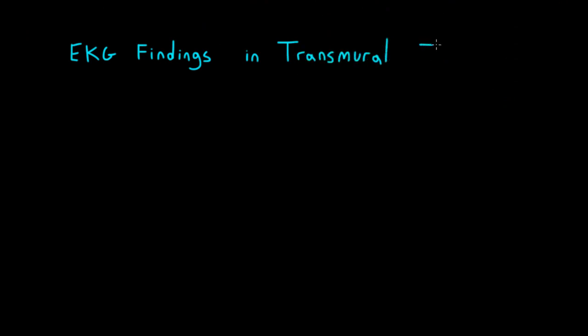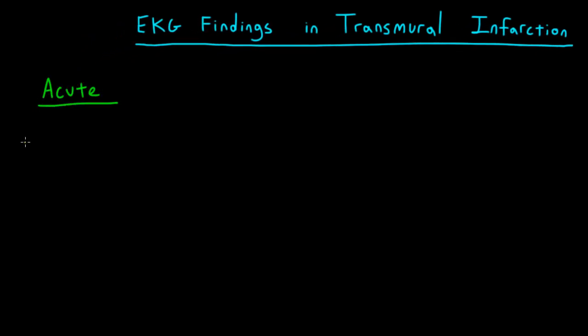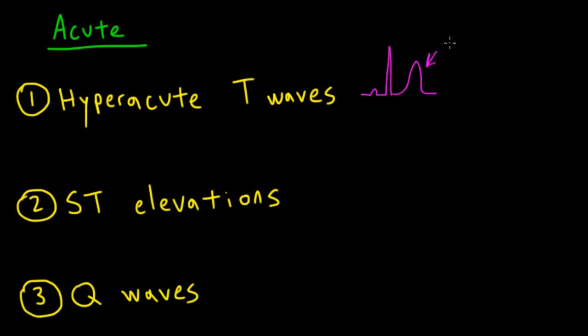Let's talk about the typical evolution of EKG findings with transmural infarction, as described in textbooks. Note that in real life, it's common for some findings to not appear or to evolve differently, especially in patients who undergo timely reperfusion. In the acute phase, the major findings are hyperacute T-waves, ST-segment elevations, and Q-waves. Hyperacute T-waves — tall-amplitude T-waves — are the earliest EKG finding, typically present only during the first several minutes after an MI and rarely present for more than an hour. They're sometimes confused with the peaked T-waves of hyperkalemia; however with MI they appear in leads corresponding to the infarct-related artery and evolve into ST elevations, while in hyperkalemia the peaked T-waves are generally more diffuse.